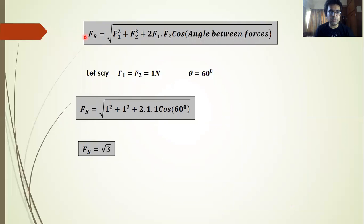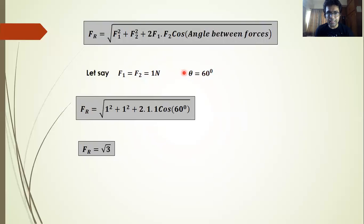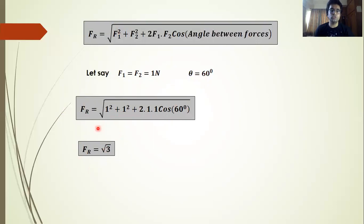We have a basic general formula for the resultant force, which we will revise and apply in electrostatics. The resultant force formula is: F = √(F1² + F2² + 2·F1·F2·cos θ), where θ is the angle between the forces. Let's say F1 and F2 are each 1 N and θ is 60°. Applying the formula: √(1² + 1² + 2×1×1×cos 60°). Since cos 60° = 1/2, the resultant force comes out to √3 units.